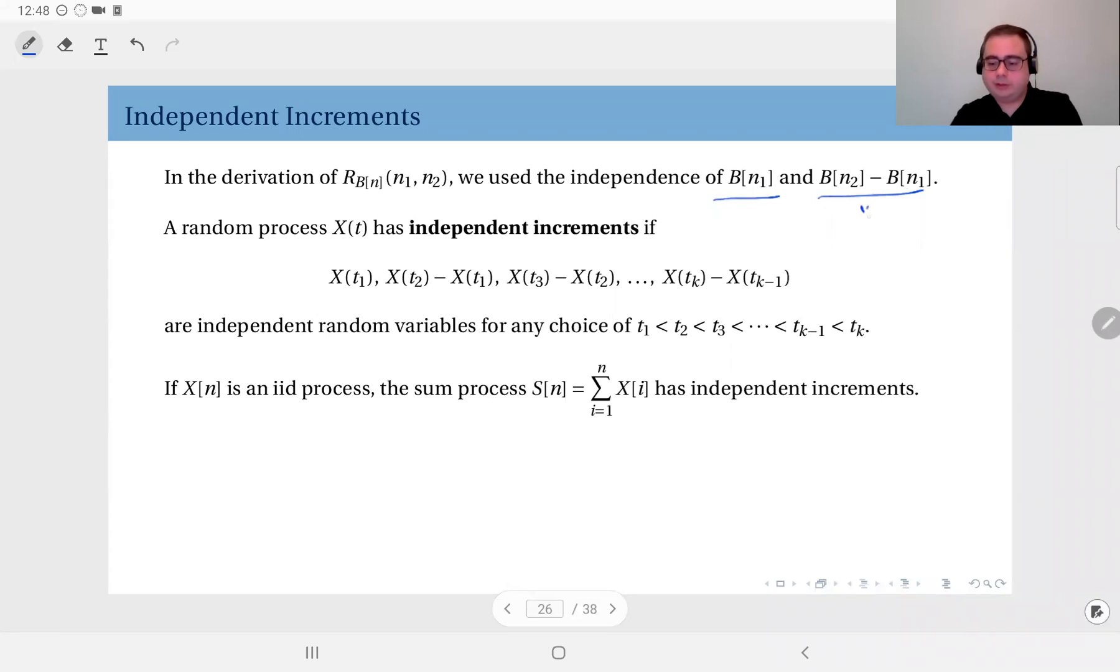Well, this part is the sum from i equals n1 plus 1 to n2 of xi. So we use this independence and this independence is what we call independent increments.